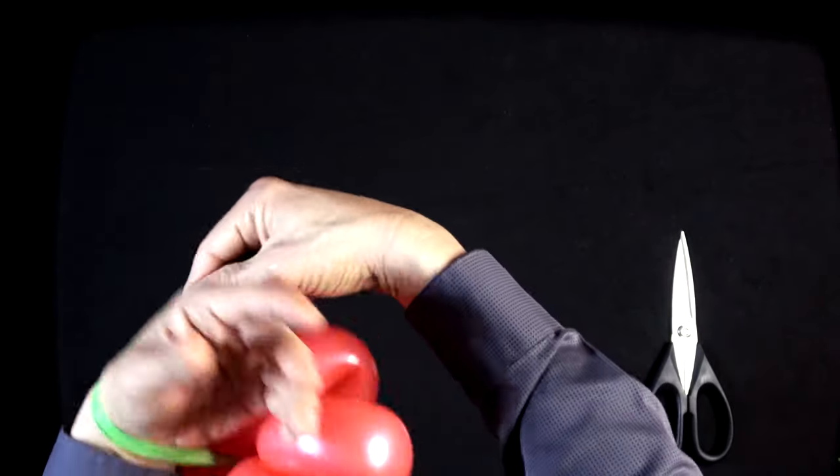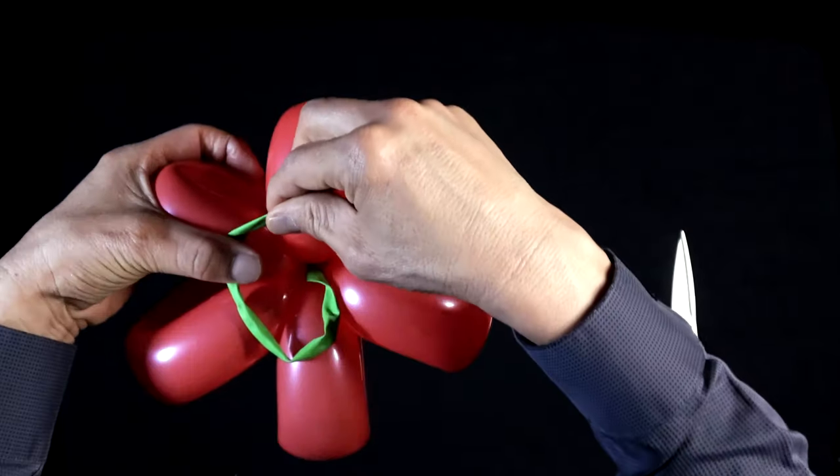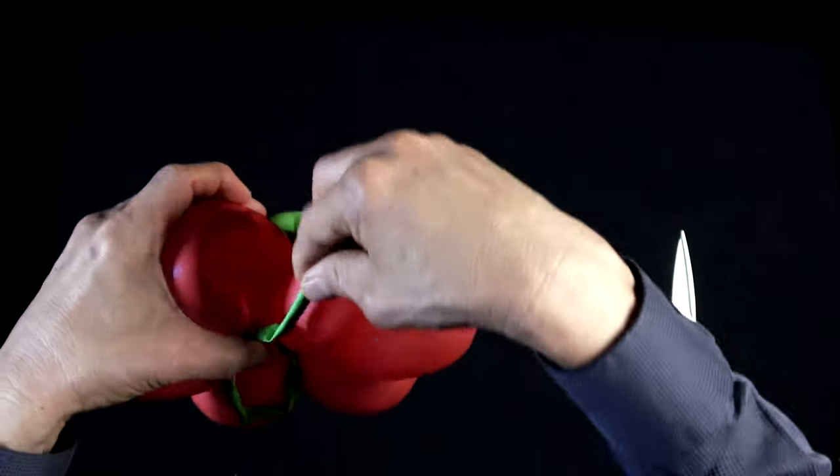Now all you do is decide how big the bracelet should be. You're just forming a loop and then wrapping this around the petals.